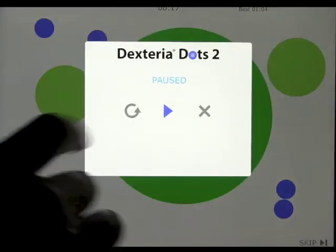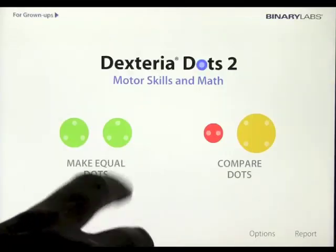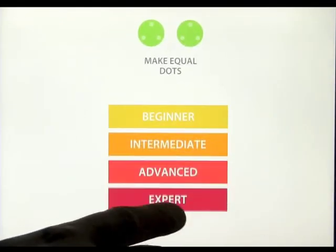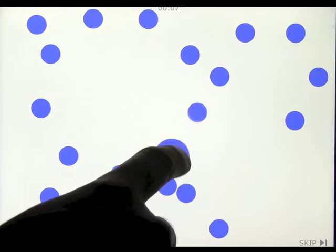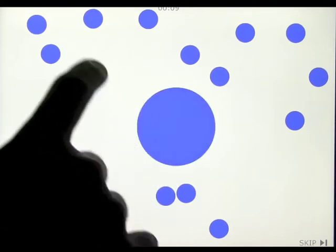Like that. And show the advanced level where we lose all of the colors. Use all the dots to make two equal dots, and then you have to continue to do this. And this is based on size, obviously.